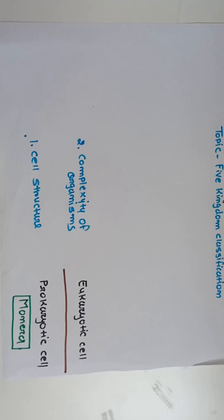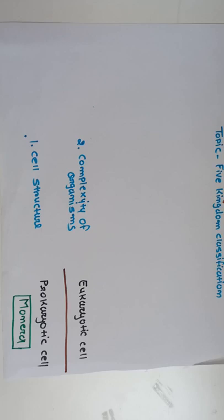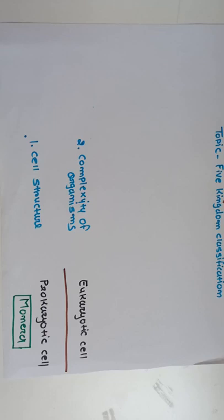Unicellular organisms have only one cell that performs all body functions. Other organisms are multicellular, having two or more cells. In multicellular eukaryotic organisms, cells combine to form tissue, tissue forms organs, and organs combine to form organ systems. So cell to organ level organization is found in multicellular organisms, while a single cell controls all functions in unicellular organisms.